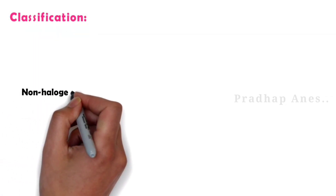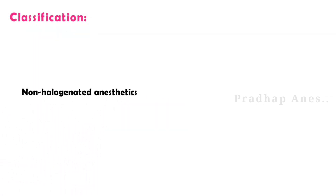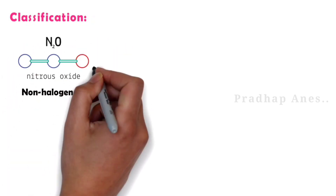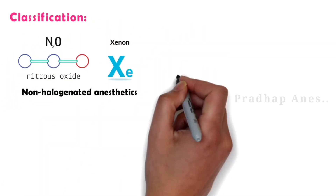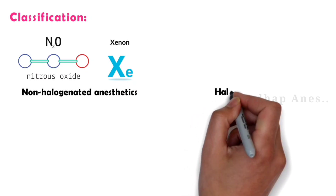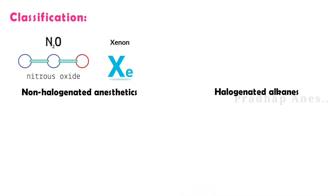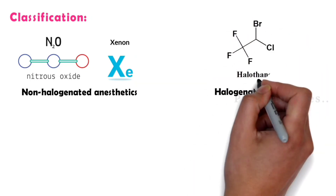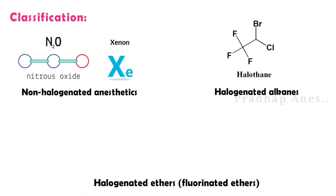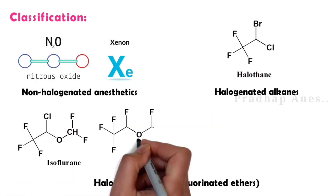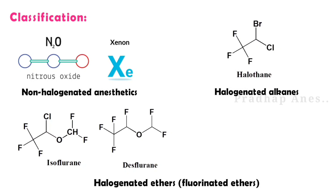Classification according to chemical structure: non-halogenated anesthetics, halogenated alkanes, halogenated ethers, and fluorinated ethers. These inhalational agents are highly inflammable, but fluorination decreases flammability and also increases potency.